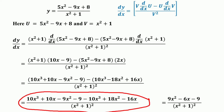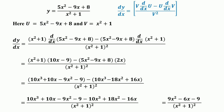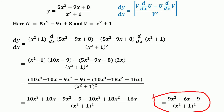Removing the brackets: 10x³ + 10x − 9x² − 9, minus 10x³ + 18x² − 16x, divided by (x² + 1) squared. The 10x³ terms cancel, giving the derivative equal to 9x² − 6x − 9, whole divided by (x² + 1) squared.